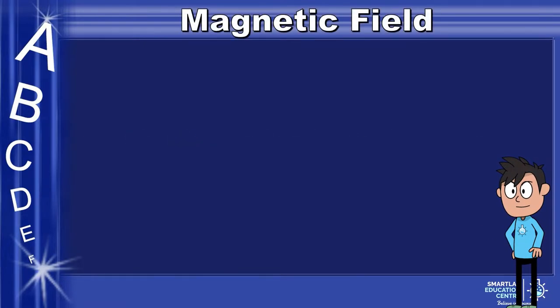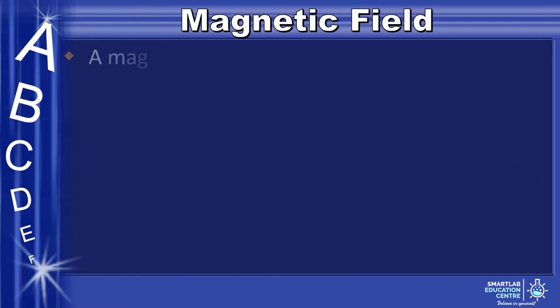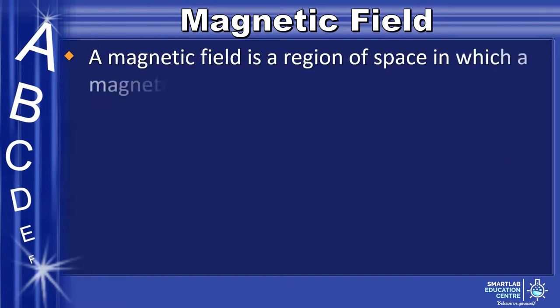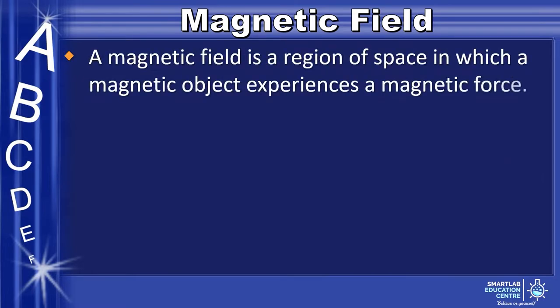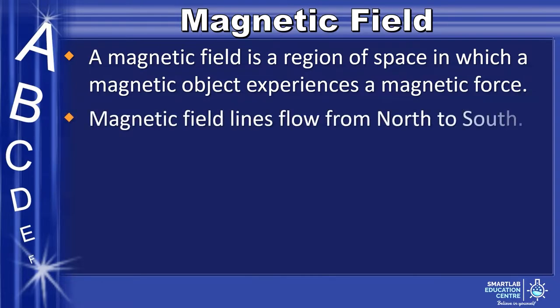What is a magnetic field? A magnetic field is a region of space in which a magnetic object experiences a magnetic force. The magnetic field lines flow from the north to the south.